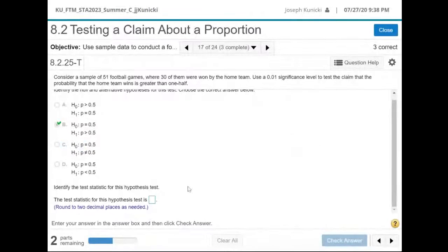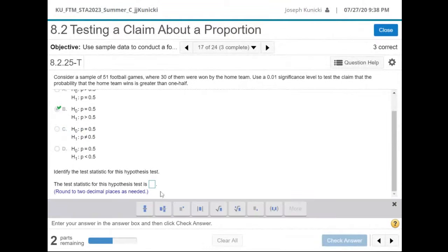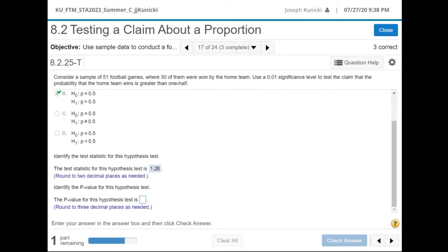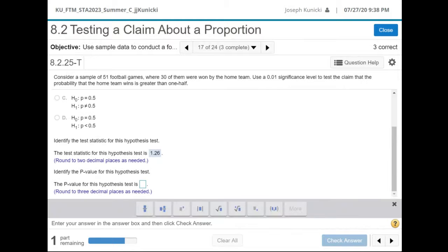They want to know the test statistic so that was 1.26 to two decimal places. Good answer. And then the p-value, the p-value to three decimal places: 104, so 0.104.